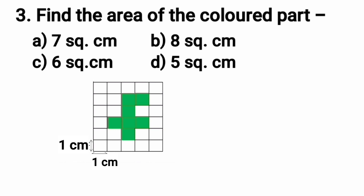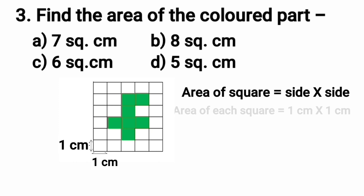We all know the area of a square is equal to side multiplied by side. Each square has a side of 1 cm, so to find the area we will multiply 1 cm and 1 cm. And the area of each small square will be equal to 1 square centimeter.